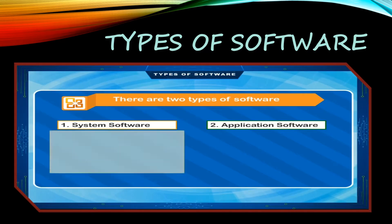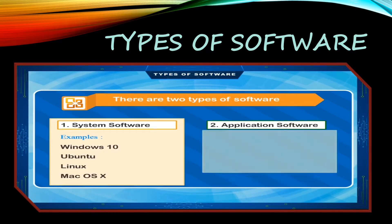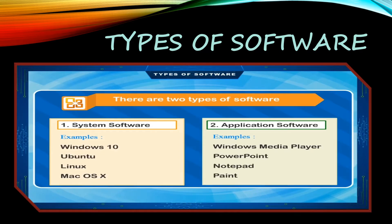Some examples of system software are Windows 10, Ubuntu, Linux, and Mac OS X. Some examples of application software are Windows Media Player, PowerPoint, Notepad, Paint, etc.